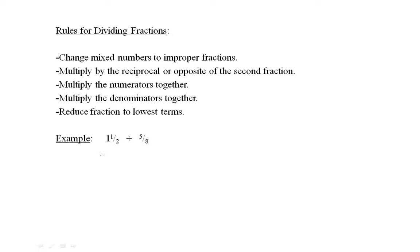1 and 1 half divided by 5 over 8. 1 and 1 half can be written as 3 over 2. 2 times 1 is 2, plus 1 is 3 over 2, divided by 5 over 8. The next step is to multiply by the reciprocal of the second fraction. So, 3 over 2 times 8 over 5.